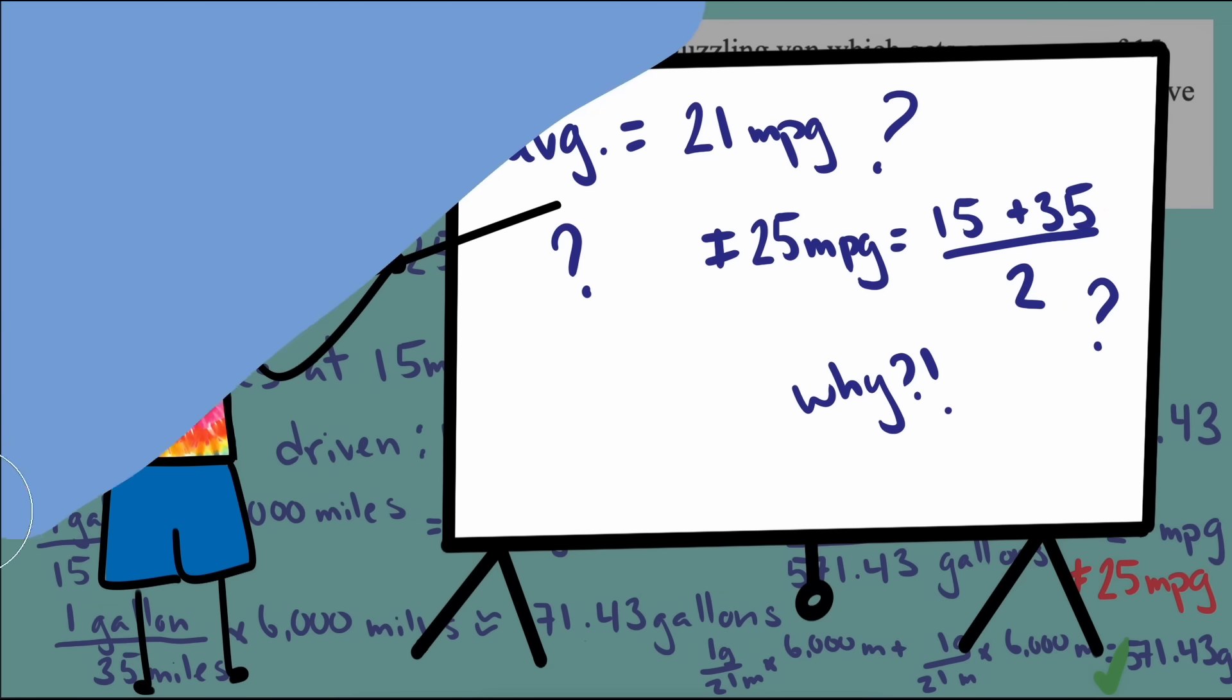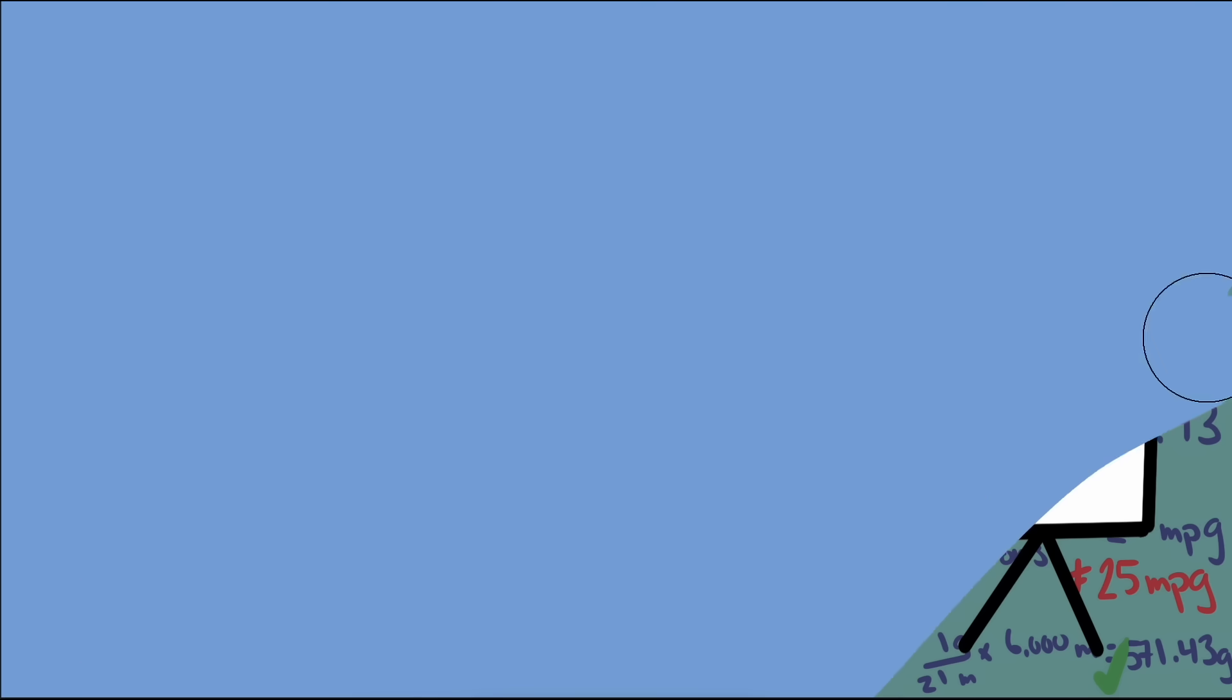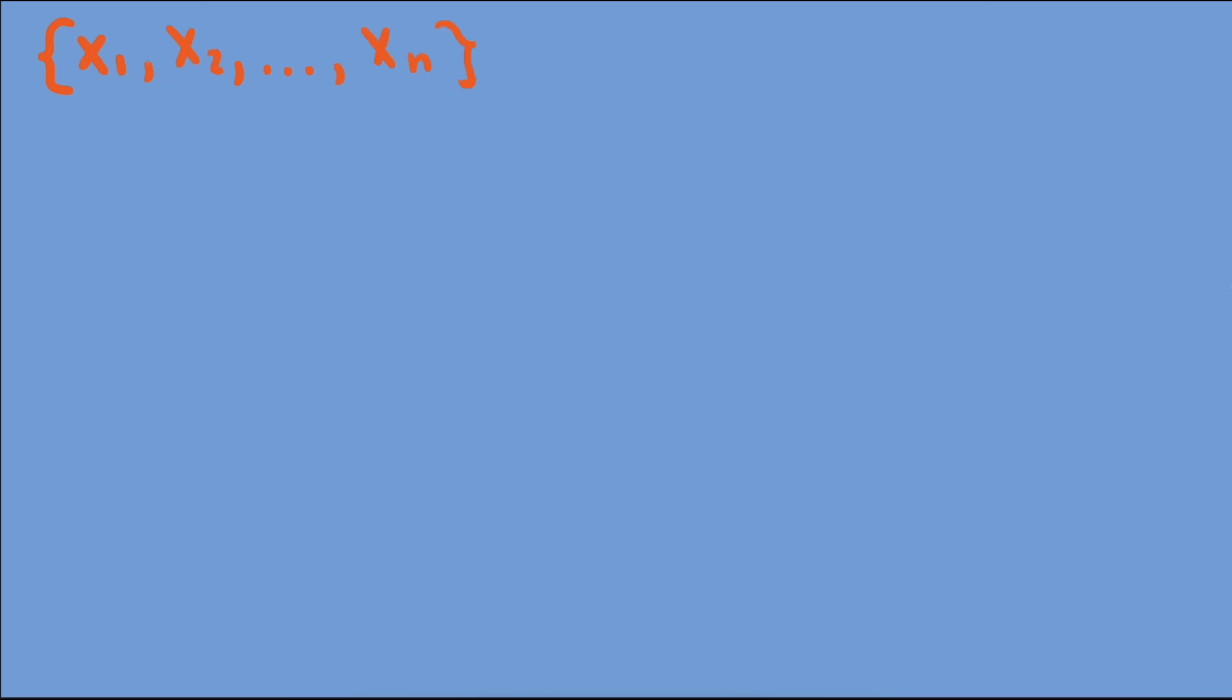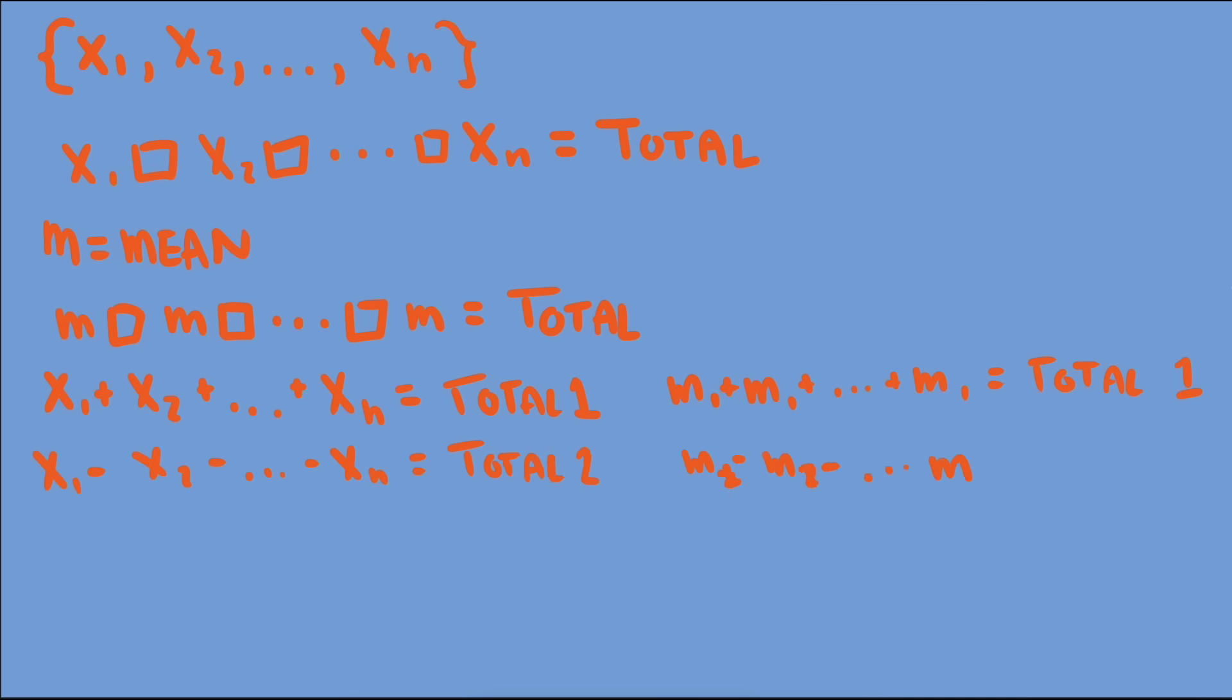Let's think carefully about what a mean actually represents. The mean of a set of values applies to a situation where we have a set of values that we combine in some way to get a total. The mean of the set of values is the single value we could replace all of the other values with and still get the same total. But because there are different ways to create a total from a set of values, we could end up with different means. A different mean for each different way of creating the total.